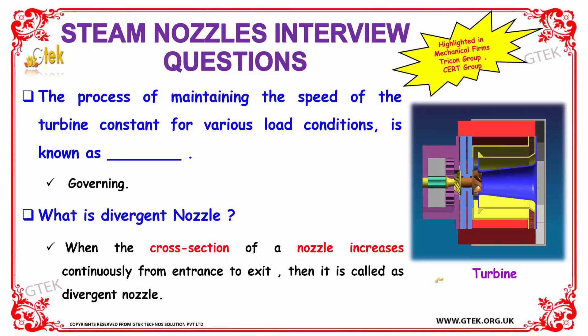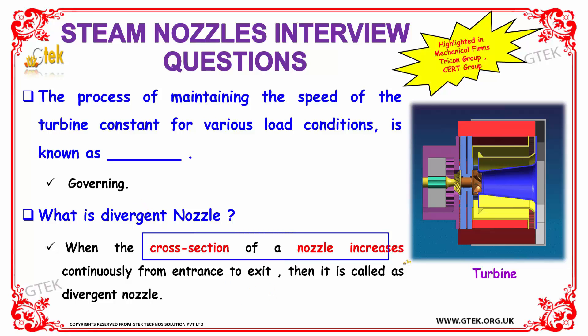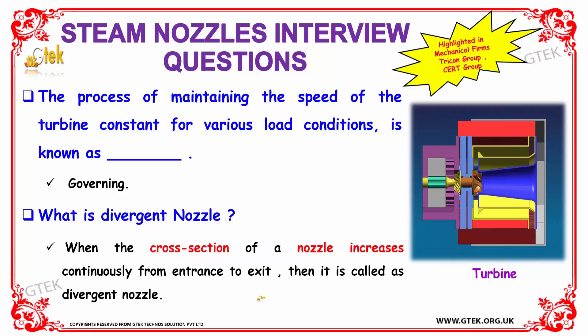The process of maintaining the speed of the turbine constant for various load conditions is known as governing. What is a divergent nozzle? When the cross-section of the nozzle increases continuously from the entrance to exit, it is called a divergent nozzle.